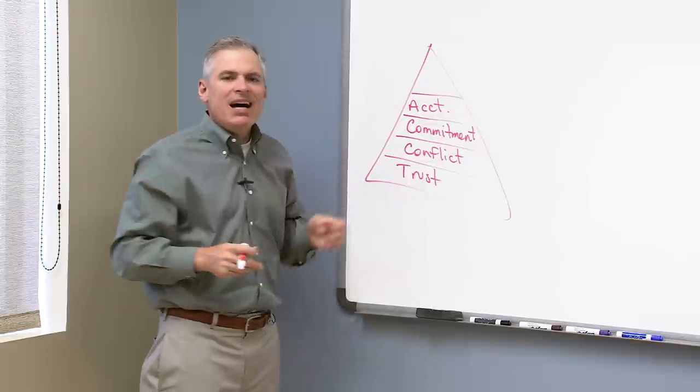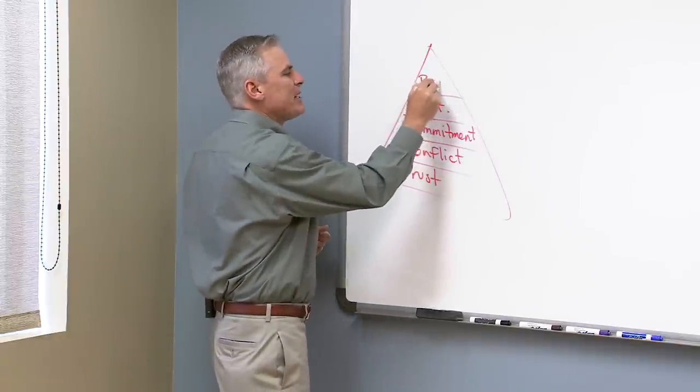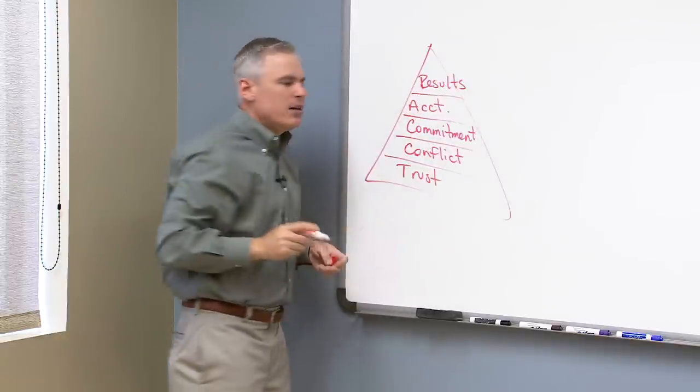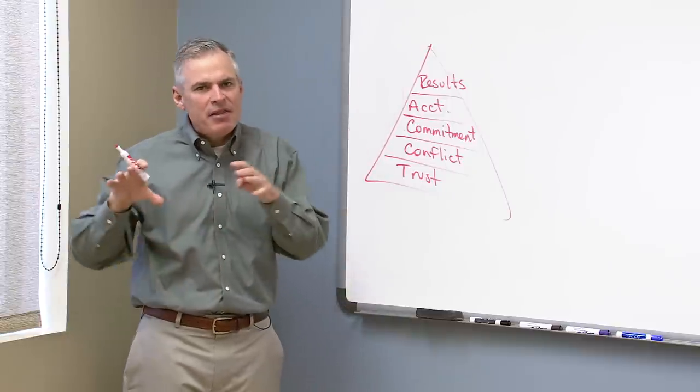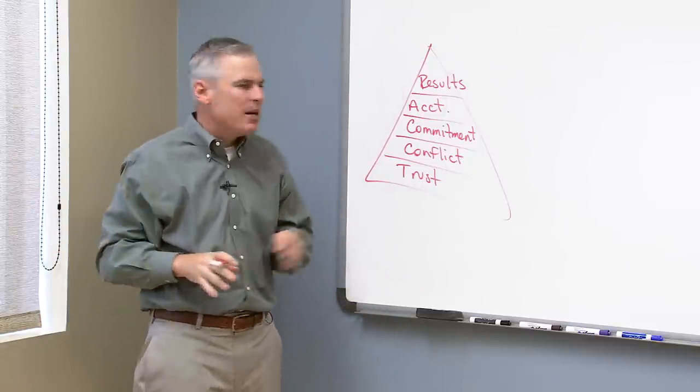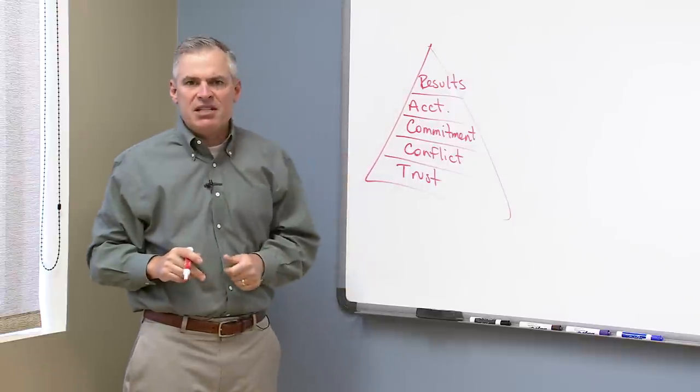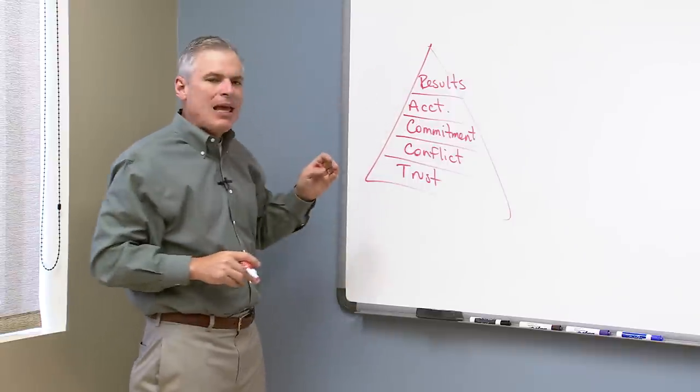And finally, accountability is what allows them to embrace the final characterization of a great team, which is the attention to results. Rather than their individual needs of their department, they're committed to the collective results of the team. So, the results come about through accountability.